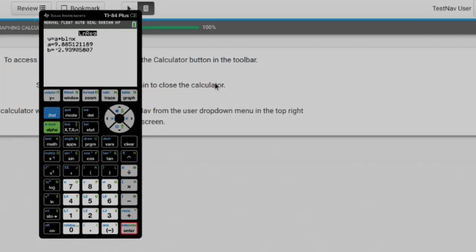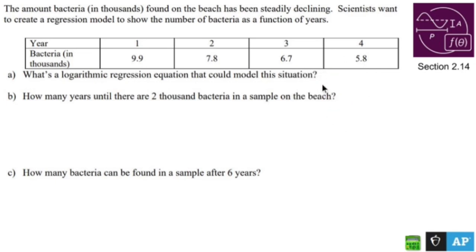So let's write that out. All right, so let's get rid of that LNREG because we're going to need all the space we can get to write out this awful formula, Y equals 9.885 minus 2.939 LN of X.